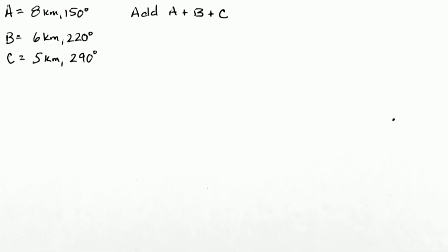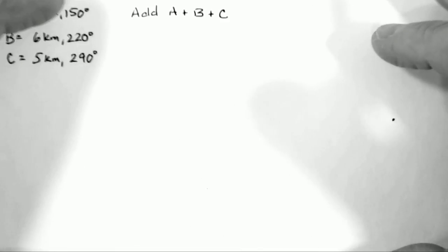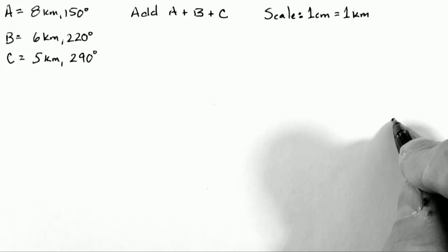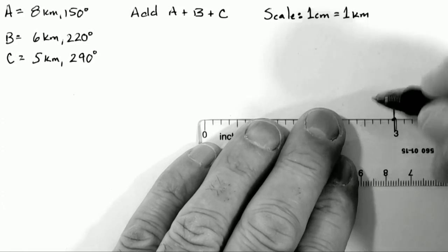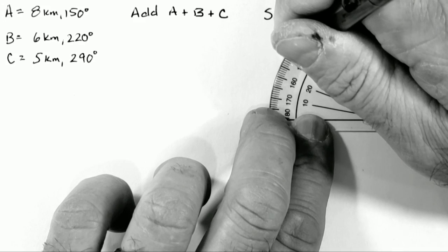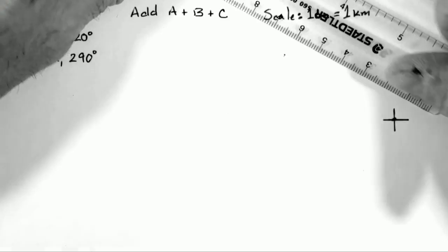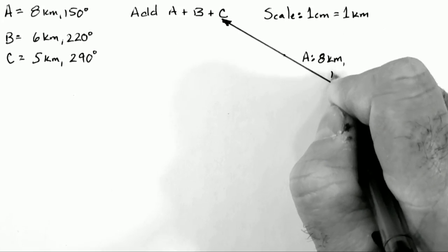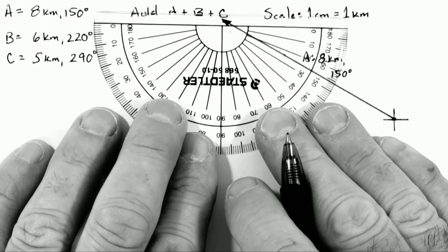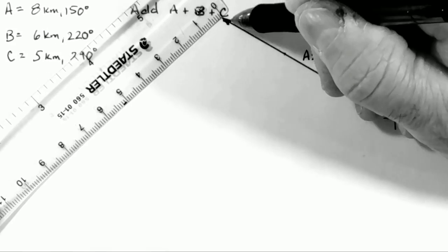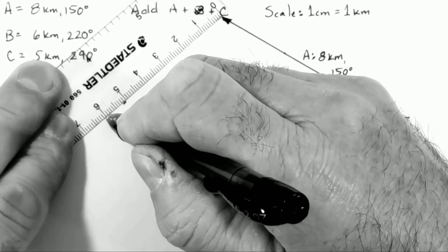Now I will apply these seven steps to the addition of vectors A plus B plus C. I begin by picking a scale of one centimeter equals one kilometer. I choose a starting point and add crosshairs. I measure vector A's direction at 150 degrees counterclockwise from east, place a hash mark as a reference, and measure out an eight-centimeter vector through that hash mark. I put an arrowhead on vector A and label its magnitude and direction. Vector B starts from the arrowhead of A at 220 degrees — 40 degrees south of west. Using a protractor, I place a reference point and aim vector B through it, extending six centimeters from the arrowhead of A.